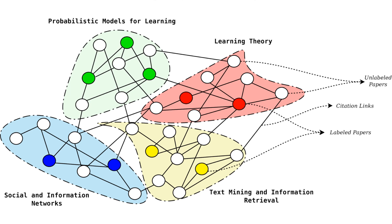The example here illustrates a network of computer science articles published in various conferences. Many conferences have a broad domain of interest, and to facilitate users, it often becomes necessary to categorize the publications of the proceedings based on the sub-domain they deal with. This information is often missing or difficult to extract for various reasons. The given network depicts the citation network amongst articles published in different conferences or journals.